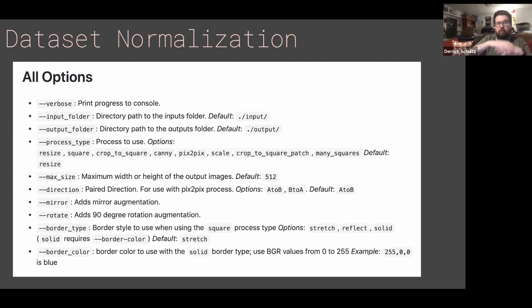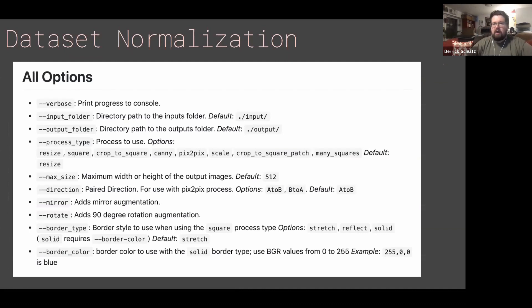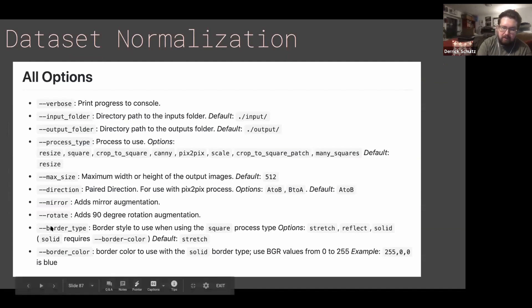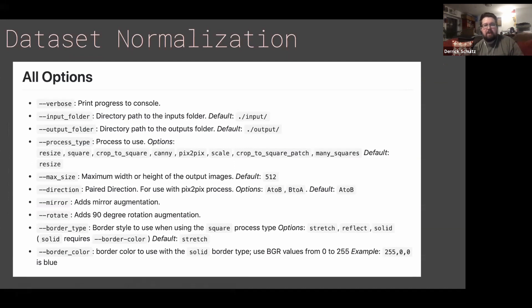So that was a quick demo of how the dataset tools library works. I'm going to record a video this week that shows a lot more of the tooling. If you're interested in a specific process or feature — like adding a solid color border, which is a border type called solid where you also specify the border color — I'm happy to add features that aren't in here yet. It doesn't take me long to build this stuff, so if there are features you want to use with your dataset, we can work on that. Thank you.